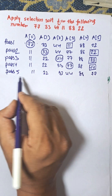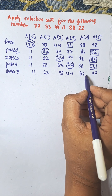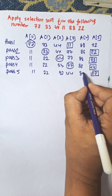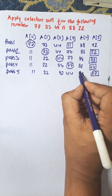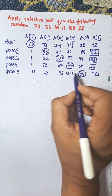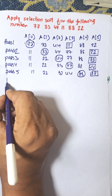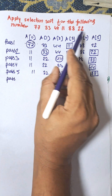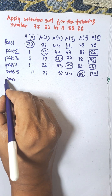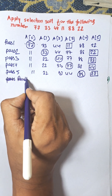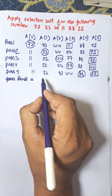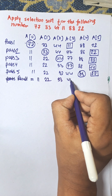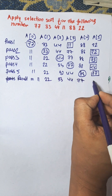During the last pass, the smallest number is 77 and the position is the fifth position, so they are swapped. The final result of this sorting is: 11, 22, 33, 44, 77, 88.